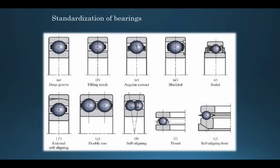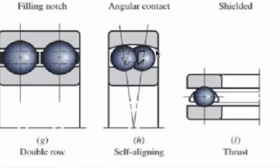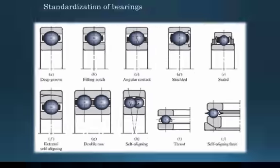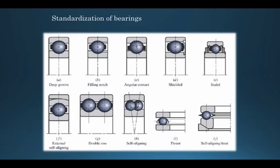Other standard ball bearing types include deep groove, filling notch, angular contact, and shielded. Self-aligned ball bearings have a special geometry that can accommodate minor deflection in the shaft — so if there is a small deflection in the shaft, a self-aligned bearing can align itself to compensate.